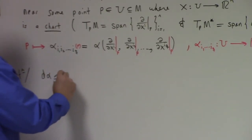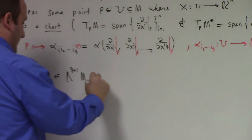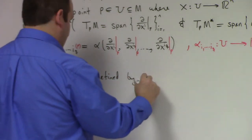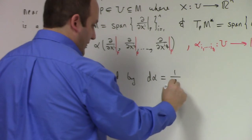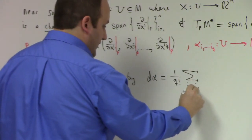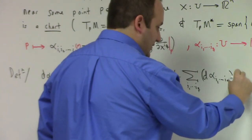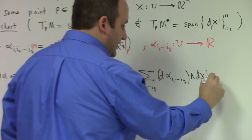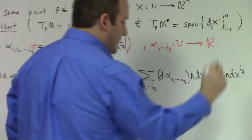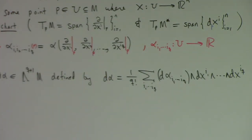D alpha is an element of the Q+1 forms on M, defined by: d alpha equals 1/Q! times the sum over I1,...,IQ of d(alpha_{I1...IQ}) wedge dx^{I1} wedge ... wedge dx^{IQ}. In other words, the exterior derivative of a differential form: you take the total differential of the functions which appear as coefficients in the form, and you wedge them with the differentials which were already present. It is the natural generalization of the total differential that respects the exterior algebra, the wedge product.